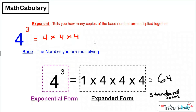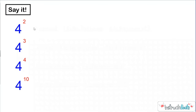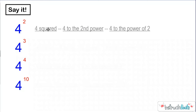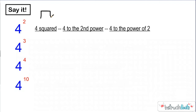So you've heard me say four to the third power. Let's practice saying exponents correctly. Here I have the same base number, four, with exponents two, three, four, and ten. If the exponent is two, you might hear people say four squared, four to the second power, or four to the power of two. Squared always means the exponent is a two. If you put down a square with length four and width four, it would make a square — that's one way I remember it.